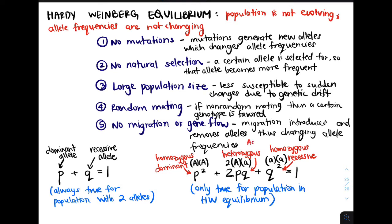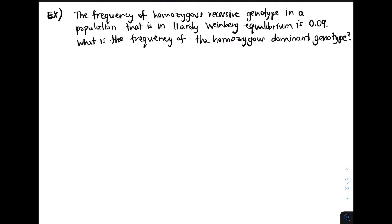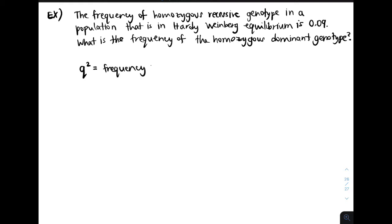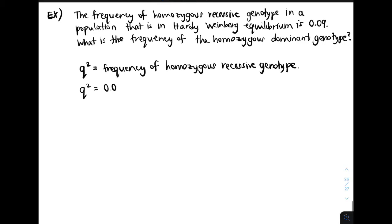Now let's actually apply Hardy-Weinberg equilibrium. This problem states that the frequency of the homozygous recessive genotype in a population in Hardy-Weinberg equilibrium is 0.09. The recessive allele is represented by Q, so we set Q² = 0.09. Taking the square root of both sides, we find that Q = 0.3.